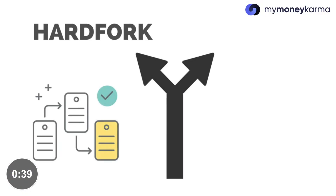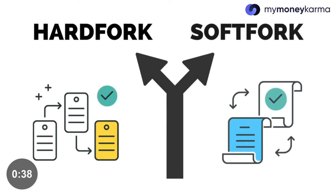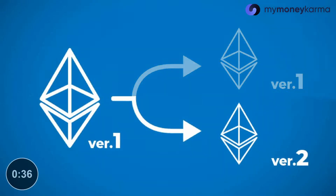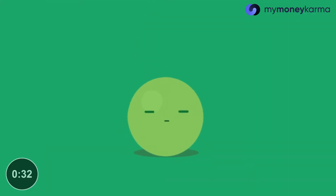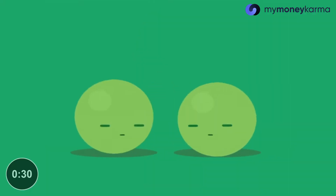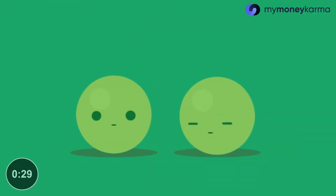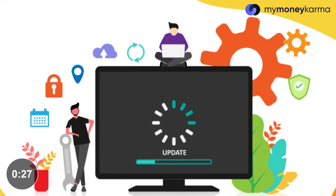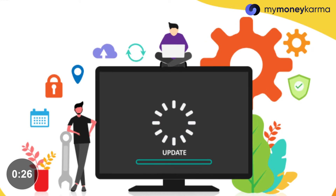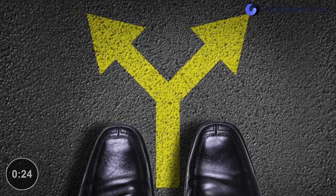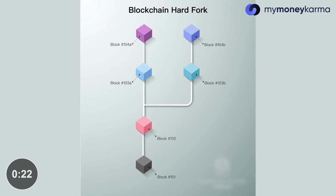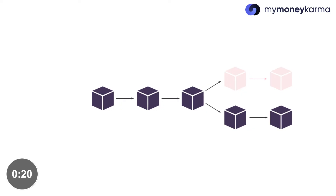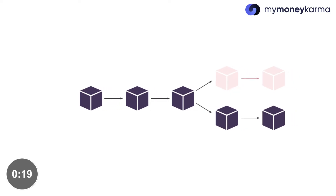Forks are of two kinds: hard and soft. With a soft fork, only one blockchain will remain valid as users adopt the update. Whereas with a hard fork, both the old and new blockchains exist side by side, which means that the software must be updated to work by the new rules. Both forks create a split, but a hard fork creates two blockchains and a soft fork is meant to result in one.